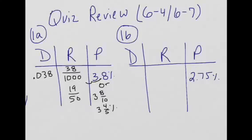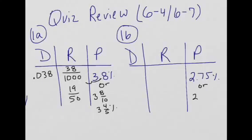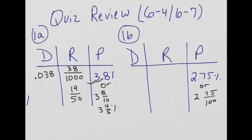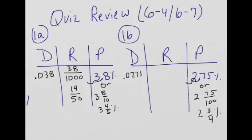The next one is 2.75%. First we write that as an OR — we put 0.75 into the calculator and change it to a fraction, which is 2 and 75 over 100, and that simplifies to 2 and 3 fourths percent. Now we take that decimal and move it two places to the left, so we get 0.0275.